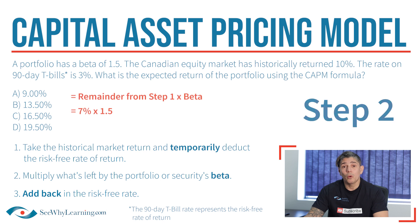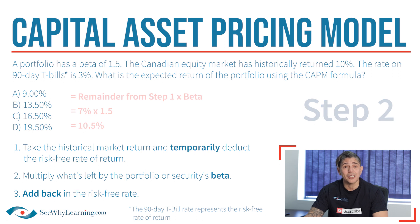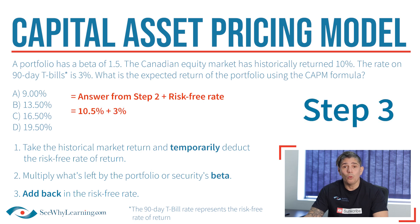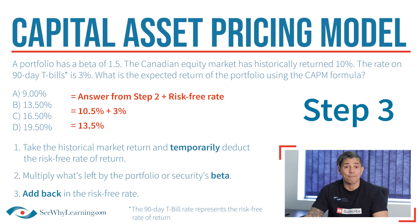Step two: we multiply 7% by the beta of 1.5 and get 10.5%. And finally, step three: we then add back the risk-free rate of 3% and get an expected return of 13.5%.